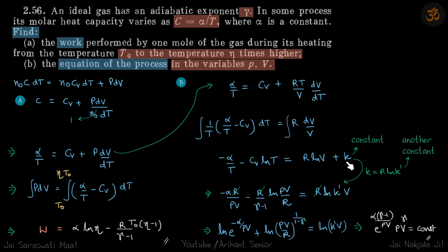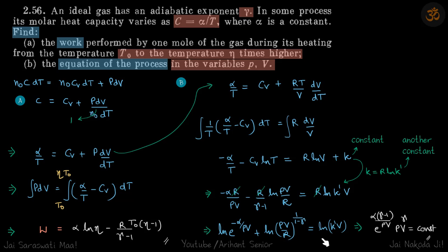This gives us our process equation. We simplify and take the constant inside, which becomes ln(K'V). On the left side we also do some simplification — we change the temperature in terms of pressure and volume, because that is what we need. The same is done for the other temperature term, and from the simplification we can get our final answer.